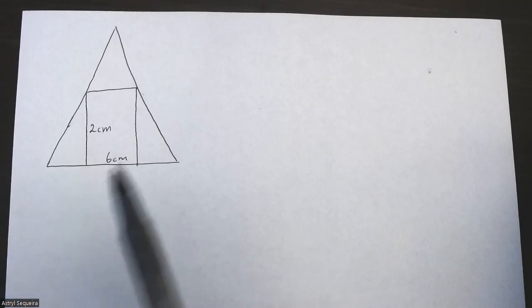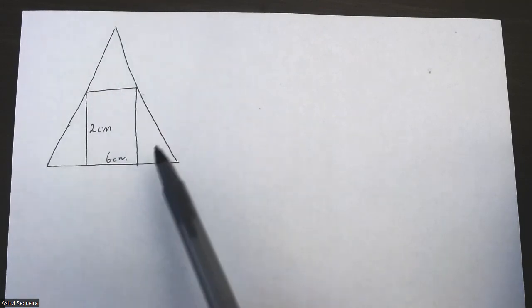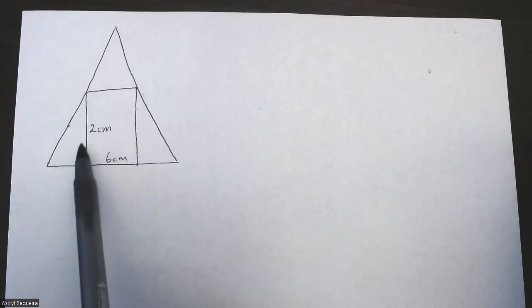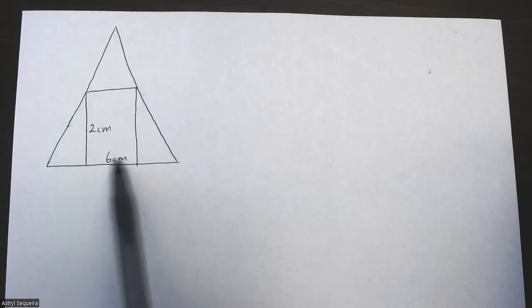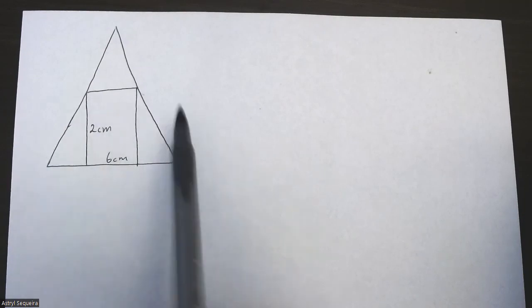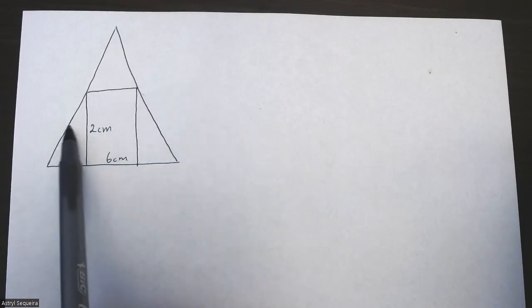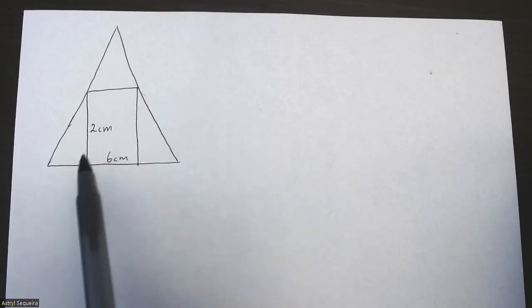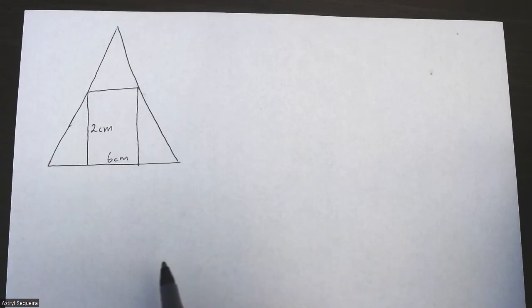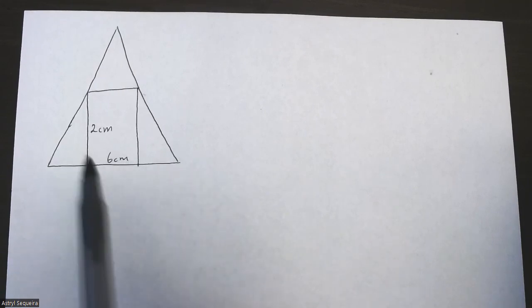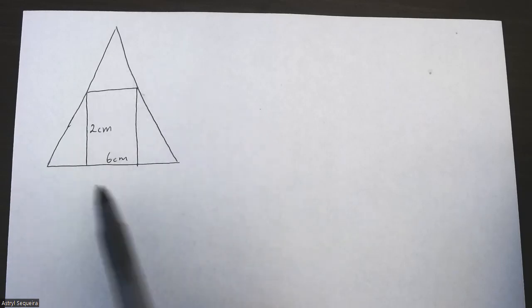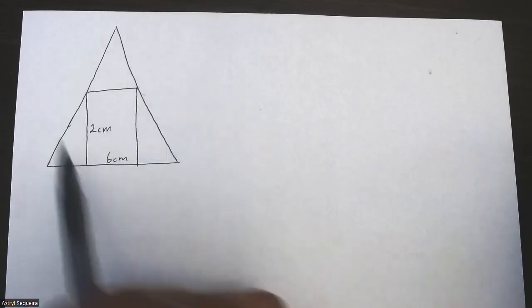Alright, so in this video we have an isosceles triangle with a rectangle inside the triangle. The height is two centimeters and the width is six centimeters of this rectangle. I know it's not accurate according to scale—technically the rectangle should be a lot shorter and wider—but it's fine, you can just use this diagram. We need to find the minimum area of the triangle and we need to find the base angle that produces the minimum area of the isosceles triangle.